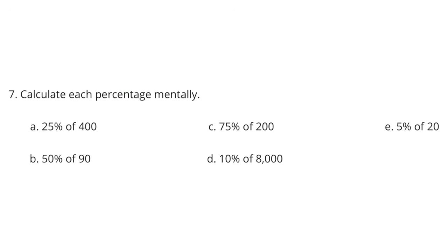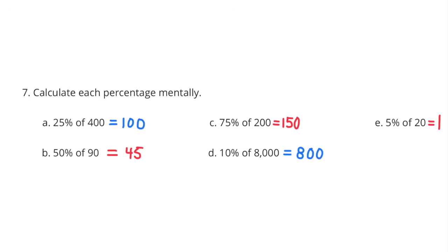Number 7. Calculate each percentage mentally. Part A: 25% of 400. Well 25% is like 1 fourth, so 400 divided by 4 is 100. Part B: 50% of 90. We know that 50% is half, so what's half of 90? 45. Part C: 75% of 200. Well 75% is 3 times 25%, and 25% is a fourth. So what's a fourth of 200? 50. 50 times 3 is 150.